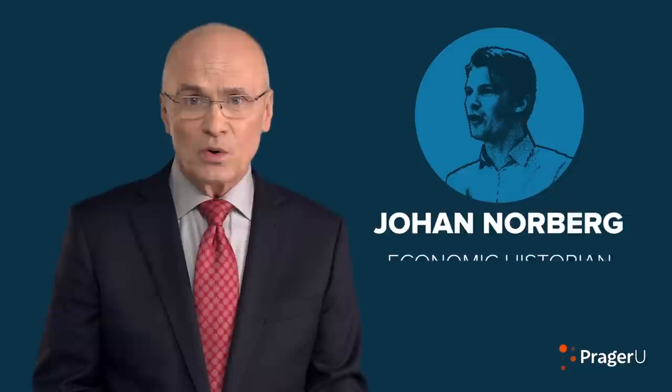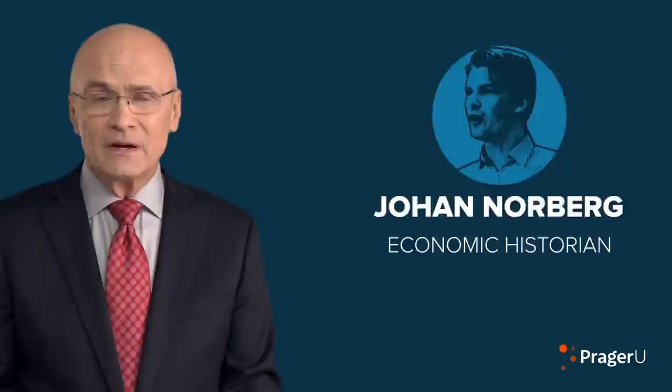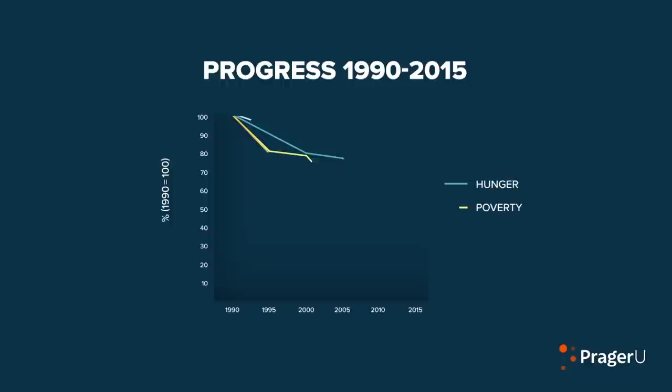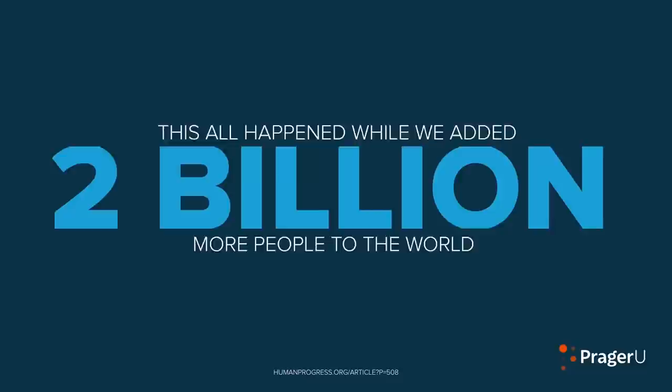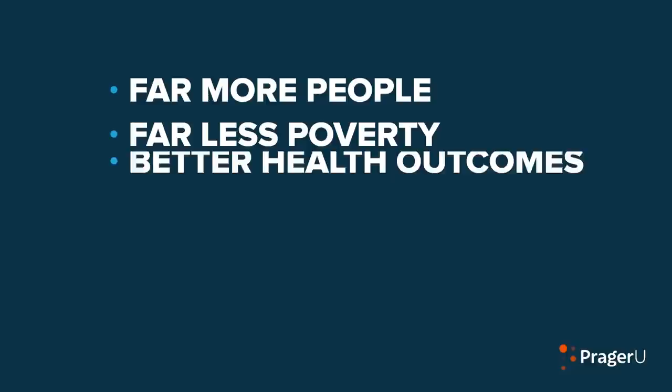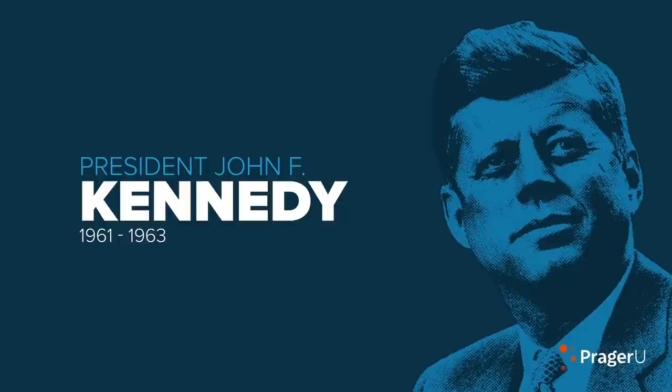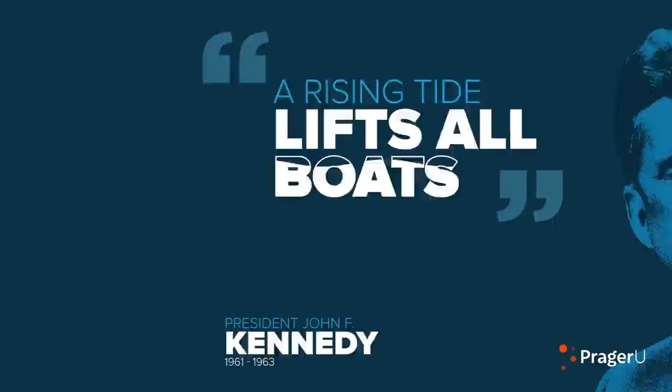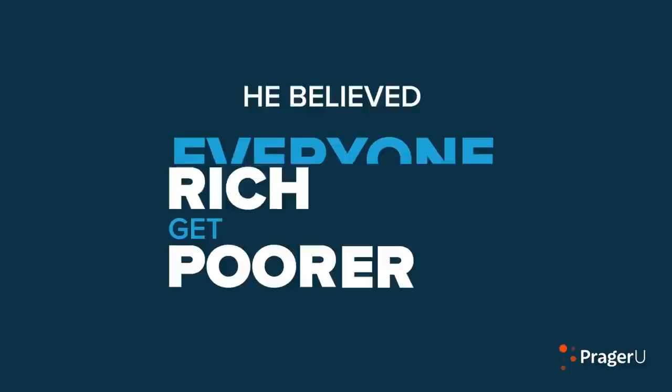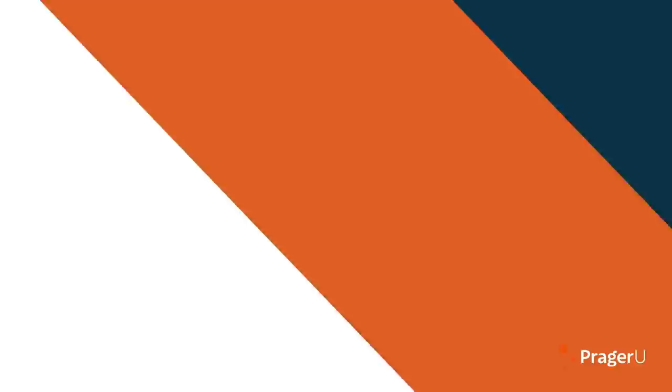One more chart. Johan Norberg, a Swedish economic historian, shows us how well ordinary people do when they work in a free-market economy. Since 1990, hunger, poverty, illiteracy, and child mortality have all declined significantly with the decline of socialism. This all happened while we added two billion more people to the world—far more people, far less poverty, better health outcomes, fewer babies dying. That's what economic freedom capitalism can do. President John Kennedy, a Democrat, said it best. While making his case for significant tax cuts in 1963, he said a rising tide lifts all boats. Kennedy didn't believe that the poor only get richer when the rich get poorer. He believed everyone could get richer with economic growth. History has shown that he was right.